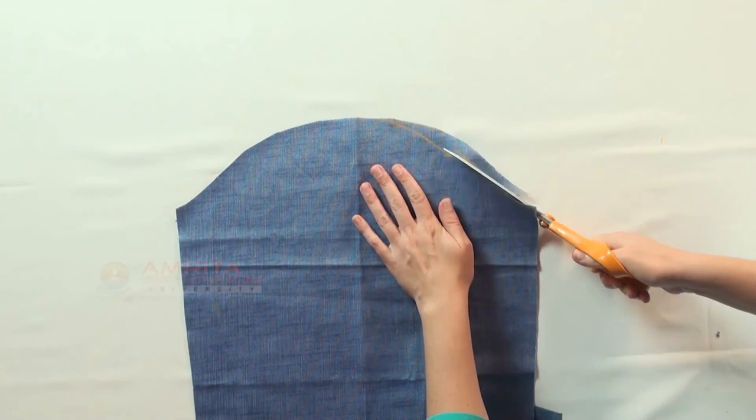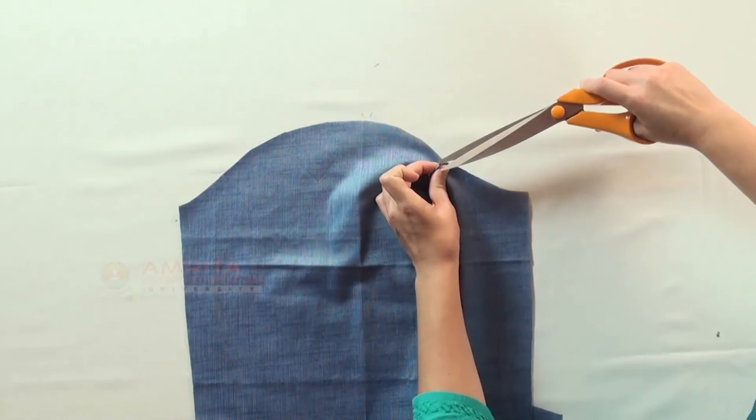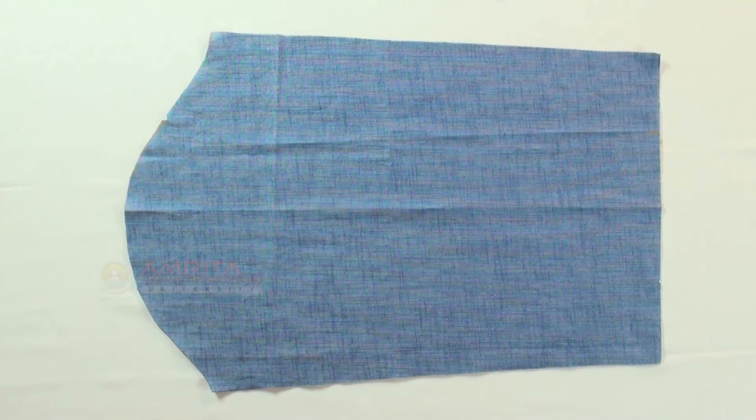Now cut along the front armhole curve. Make a notch at the center point of the front armhole curve. This we have finished cutting the sleeves for men's shirt.